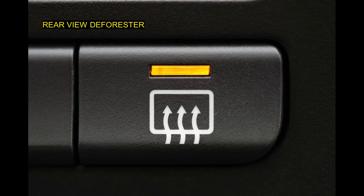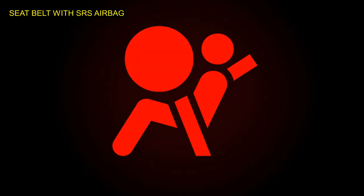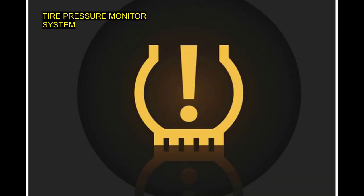The seatbelt with SRS airbag sign — the passenger and driver have the seatbelt function. The seatbelt will start. I will start with the dashboard and the SRS airbag system. I will also cover the tire pressure monitor system indicator.